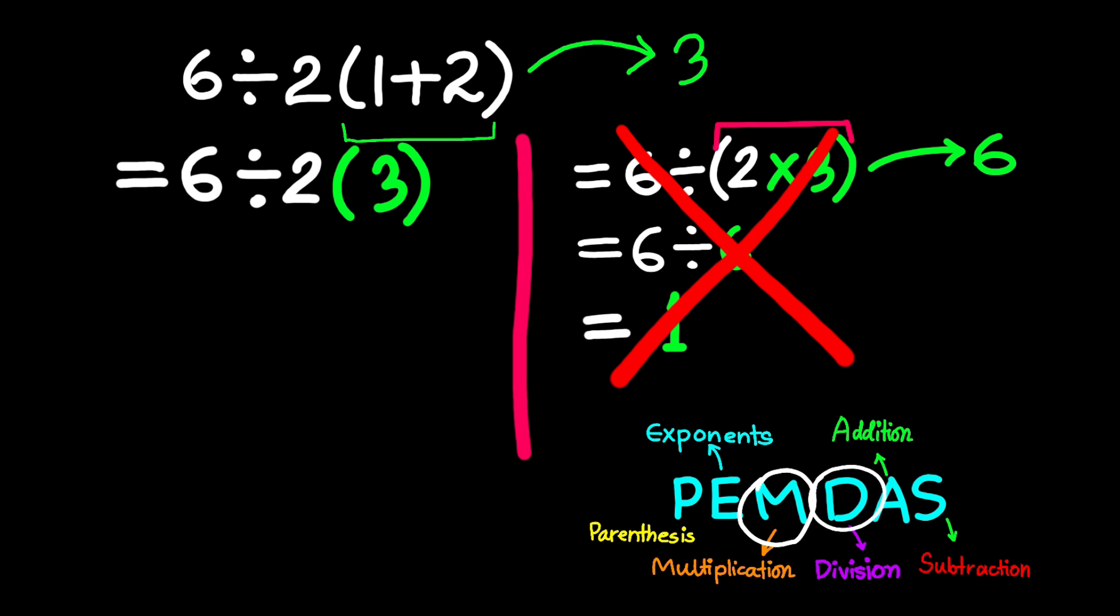And remember, multiplication and division have equal priority, so we do them from left to right. The same thing applies to addition and subtraction, always left to right.